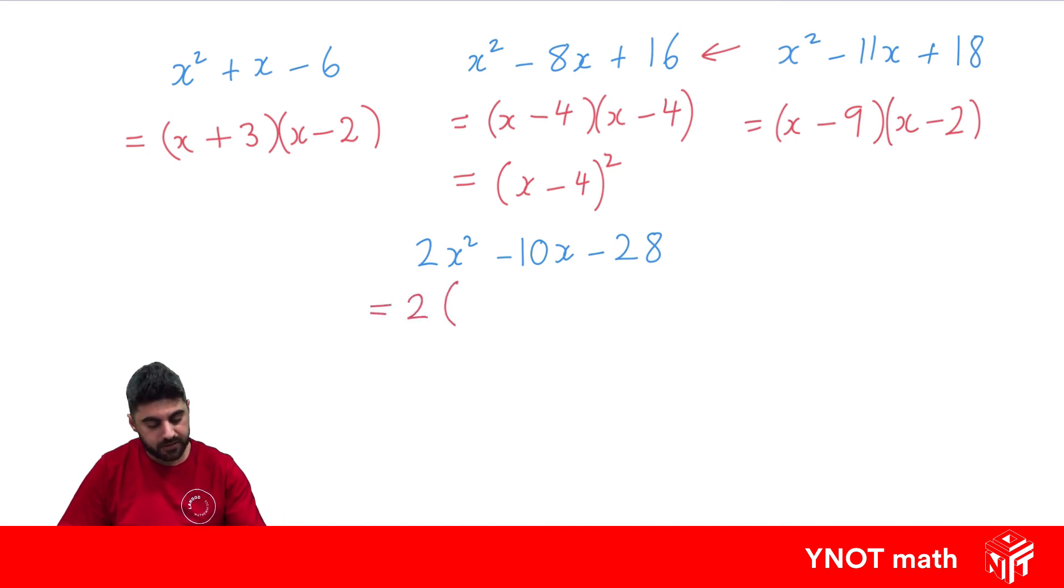If we take out 2, we're left with x² - 5x - 14. Inside here, we now have a monic quadratic, which we can factorize.